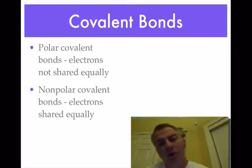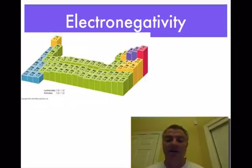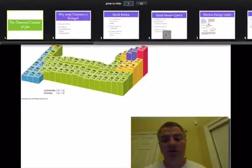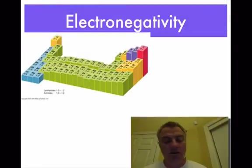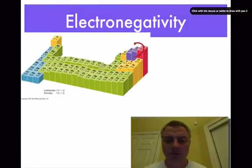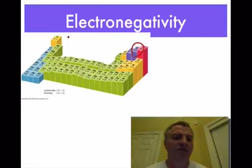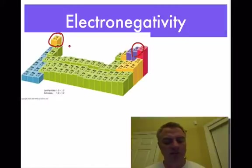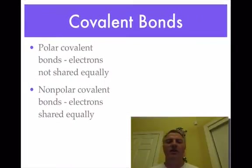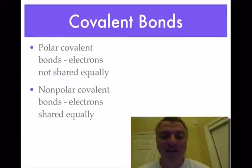When they share them unequally, that is considered a polar covalent bond. Sometimes we'll call them a polar molecule. Water is a good example of that. Whenever you look at water molecules, the electrons are not shared equally between the hydrogen and the oxygen. Oxygen has a very high electronegativity value, it's over here on the chart at about 3.5, and hydrogen is about 2.1. So when they share electrons, they don't share them equally. Electrons will spend most of their time closer to the oxygen than the hydrogen. Therefore, water is considered a polar covalent bond.